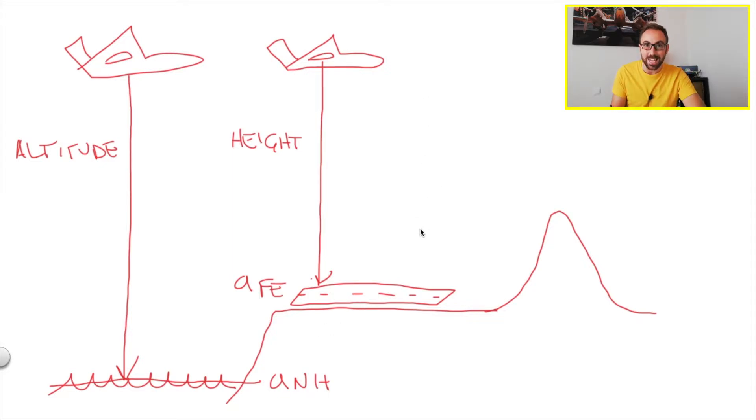Then we have the QNE. The QNE is a standard pressure reference of 1013.25 hectopascal. The QNE, for this example, let me draw the QNE in here. Here we go. So QNE and this is 1013.25 hectopascal. And an aircraft using the QNE as a reference will fly following flight levels.